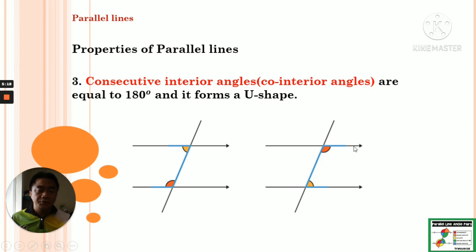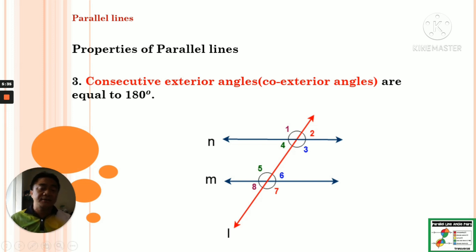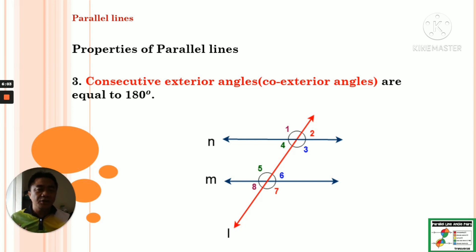It forms like a letter U. We also have consecutive exterior angles — co-exterior angles — and their sum is also 180 degrees. So angle 1 and angle 8 sum to 180 degrees, and angle 2 and angle 7 also sum to 180 degrees. For consecutive angles, they must be on the same side of the transversal line — if it is the right side, both are on the right side; if left, both on the left. The sum of the two consecutive angles, whether exterior or interior, is always 180 degrees.